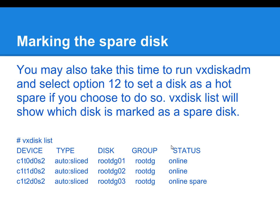At this point, we're going to mark a disk as a spare. There's an inconsistency here — VxPrint already showed the spare disk, but it wouldn't have shown that until after we performed this step. To mark a hot spare: run VxDiskADM and select option 12 to set the hot spare. Running VxDiskList again, we can see that c1t2d0 has been marked online as a spare — that is the last disk at the bottom of the page.